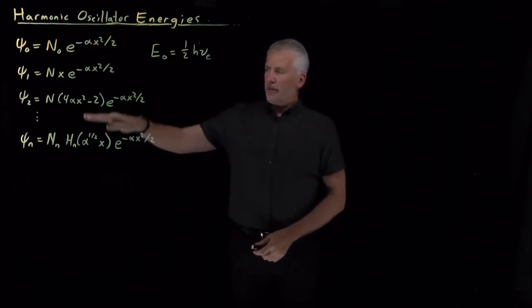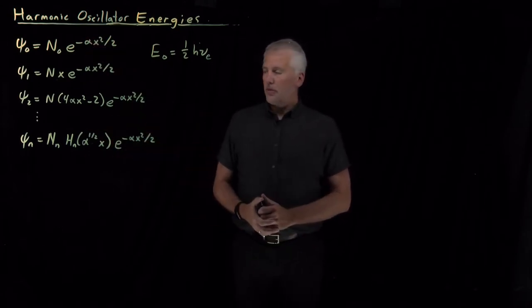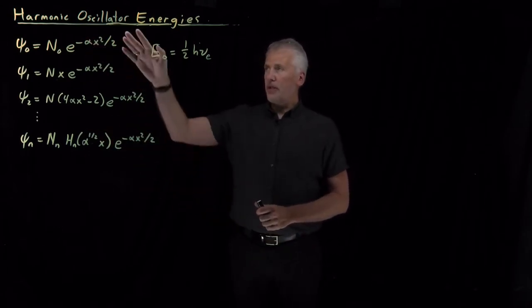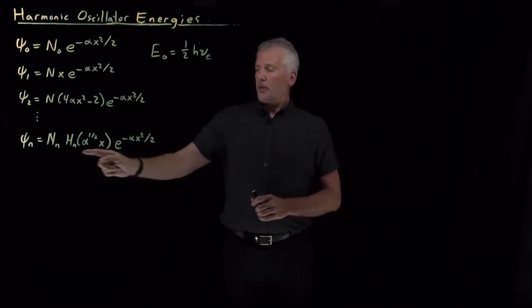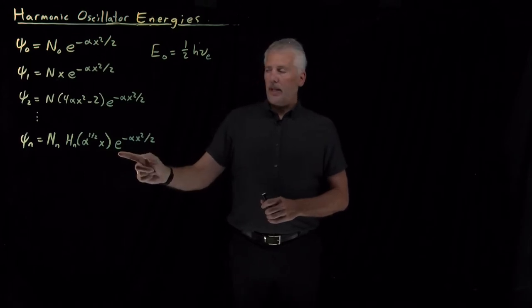We've managed to come up with a whole family of solutions for the wave functions that solve the harmonic oscillator Schrodinger equation. They all have this form of some Hermite polynomial multiplying a Gaussian.